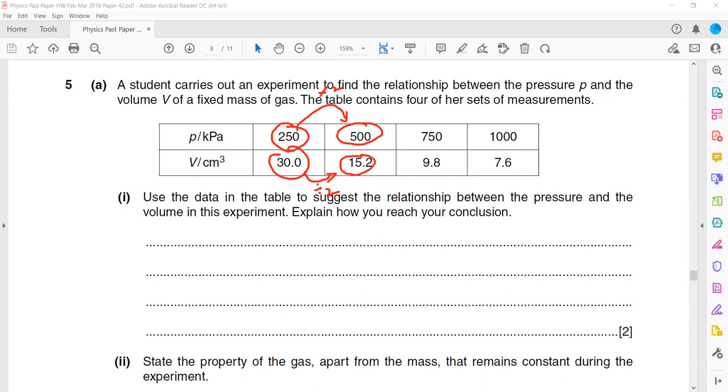If we double the pressure, the volume will be half. And whenever two quantities are inversely proportional, their product is always constant. That's always the case for two inversely proportional quantities.